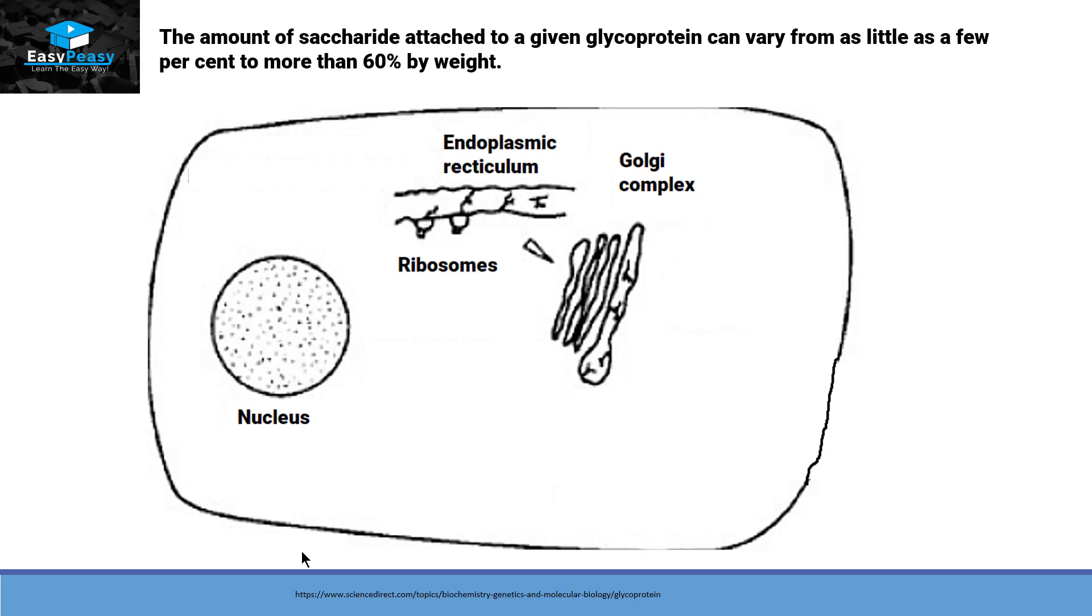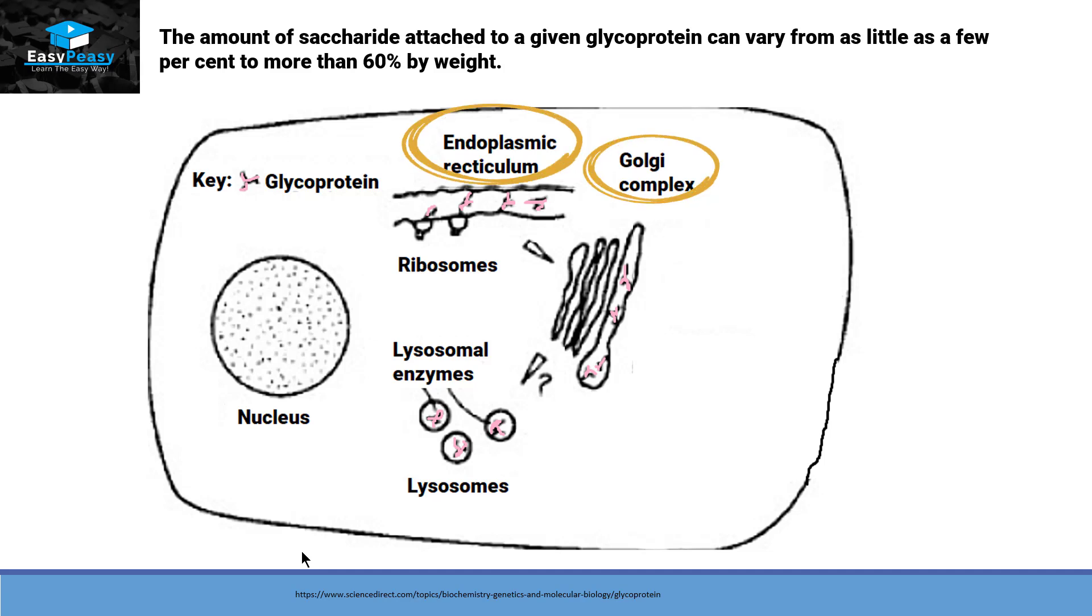The amount of saccharide that are attached to a given polypeptide chain can vary from as little as a few percent to more than 60 percent by weight. The most common location of the attachment of glycoprotein is endoplasmic reticulum and golgi complex. From there they can either go into the lysosomes or go towards the cell surface.